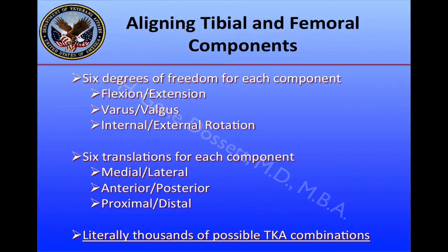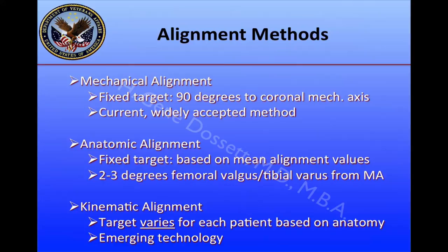When we align tibial and femoral components, there are six degrees of freedom for each component: flexion-extension, varus-valgus, internal-external rotation, and then there are six translations for each of those components — medial-lateral, anterior-posterior, proximal-distal. There are literally thousands of possible combinations.